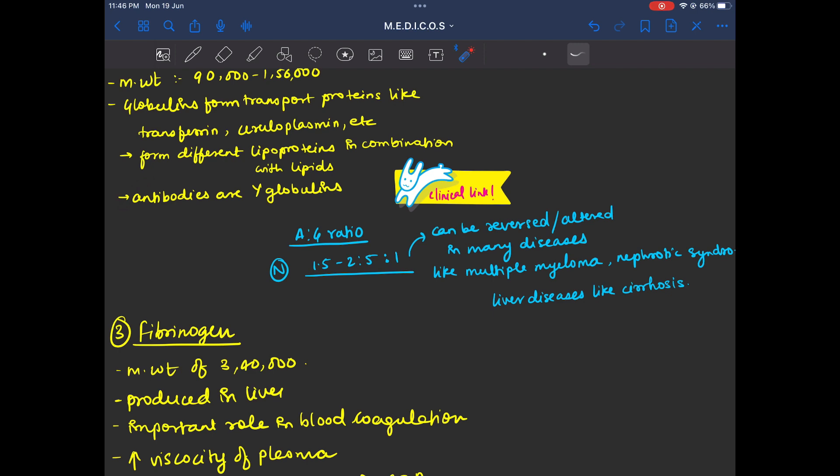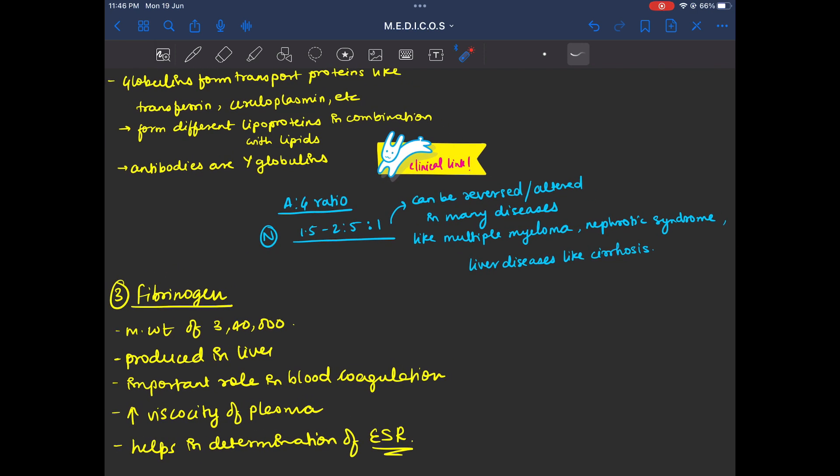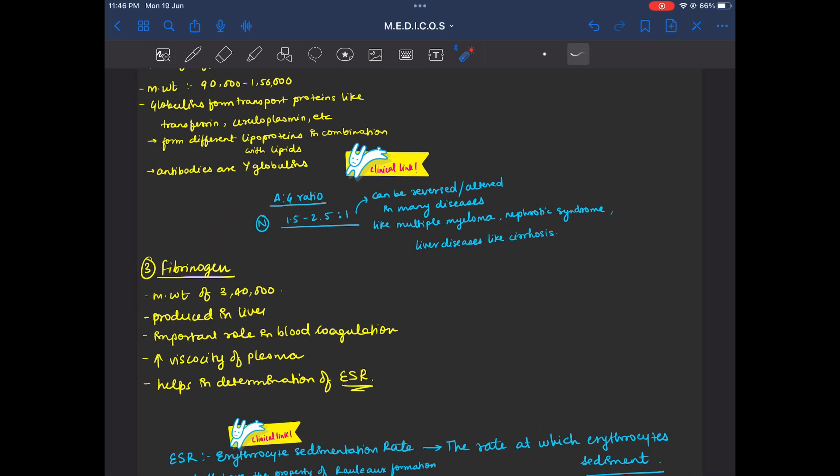Antibodies will help in immunity. Clinical link is important. Albumin to globulin ratio - what is the normal range? 1.5 to 2.5 is to 1.